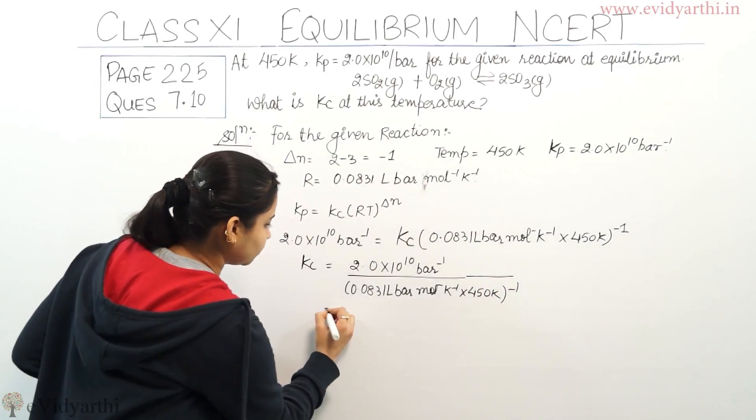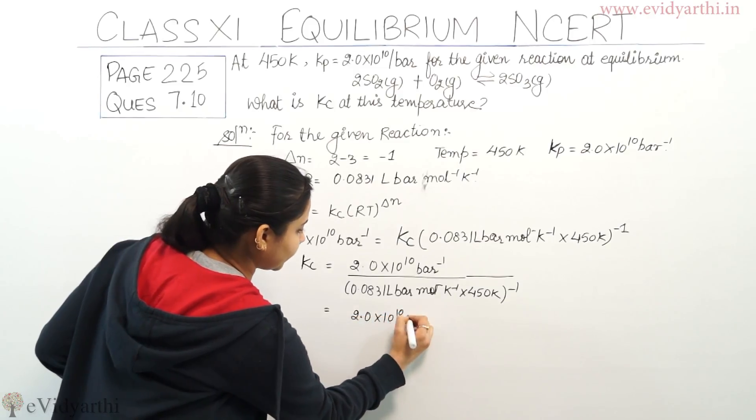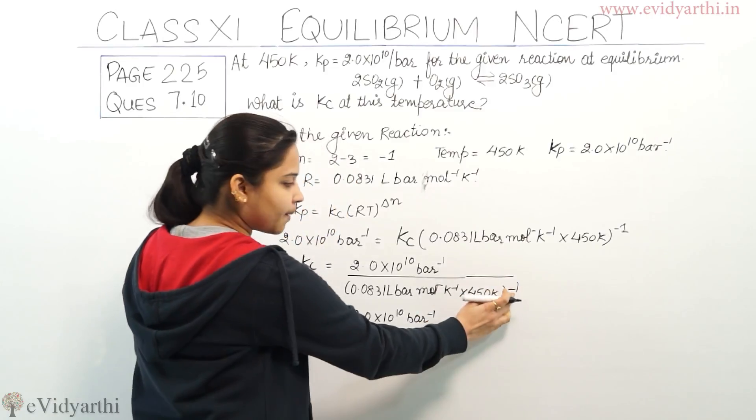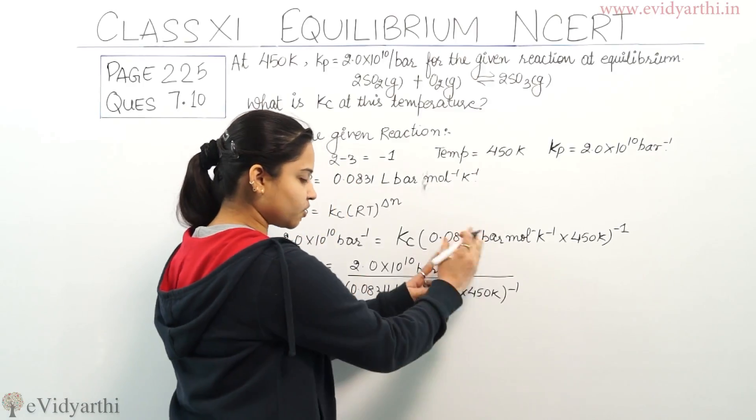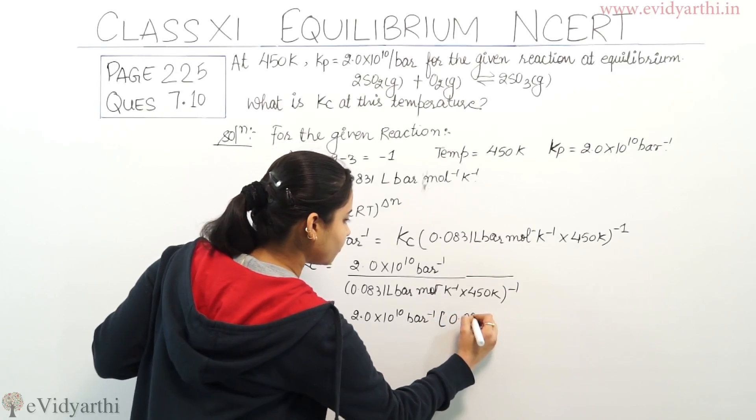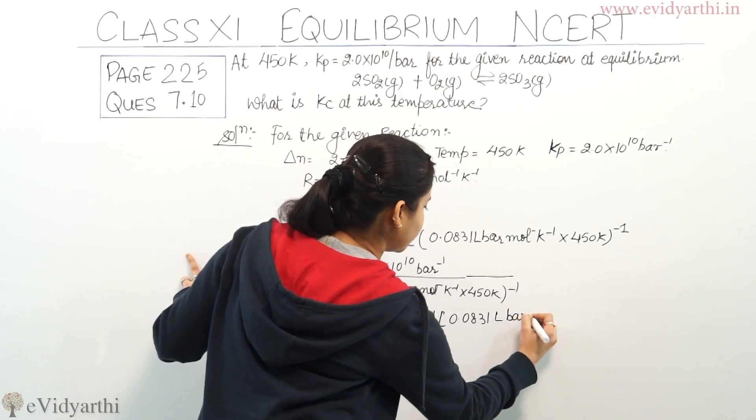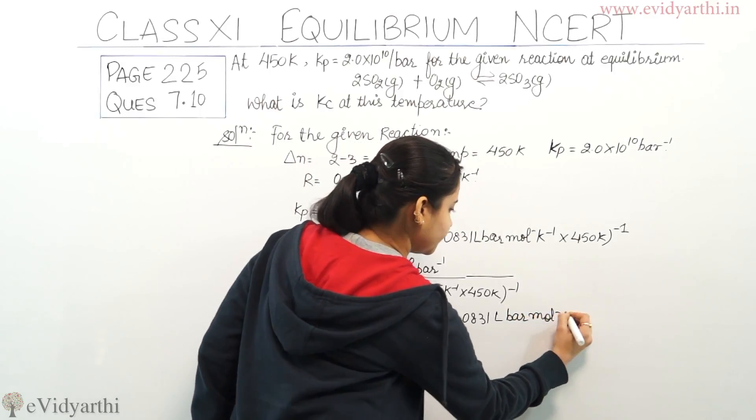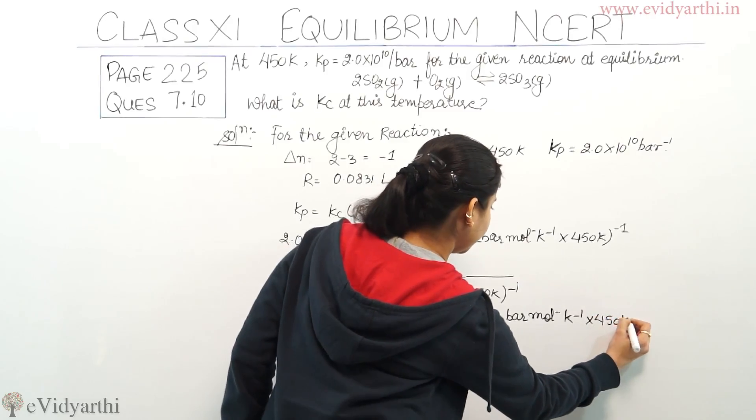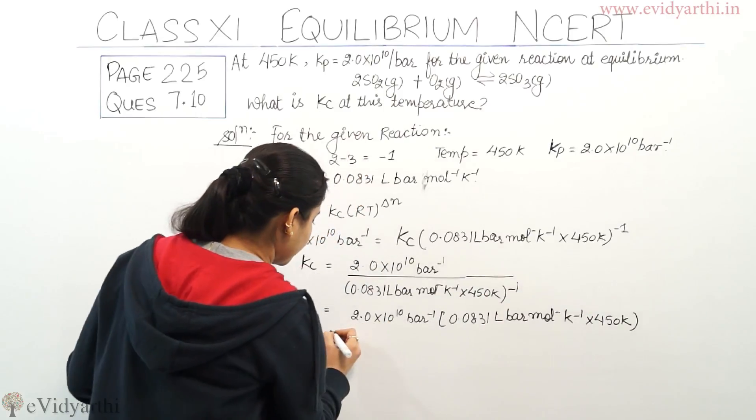If we further solve this, what we'll get is 2.0 × 10^10 bar^-1. Since we have an inverse here, if we bring this up, the inverse will cancel out. So now we have 0.0831 liter bar mol^-1 K^-1 × 450 K. If you calculate this, you will get the answer.